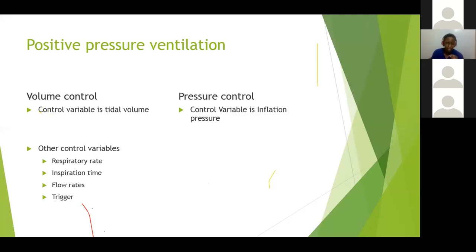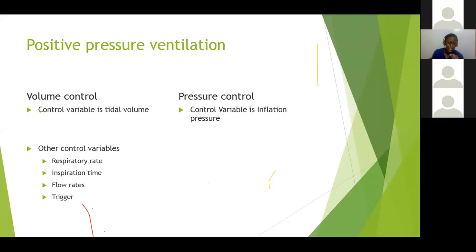Other control variables you can set on the machine include respiratory rate, inspiration time, flow rates, and triggers. What the machine measures are known as measured variables. When you breathe in normally, you create negative pressure in your pleura, but ventilators blow air into your lungs — that is positive pressure ventilation. The reason we call it positive pressure is that the machine overcomes the negative pressure you would normally create.